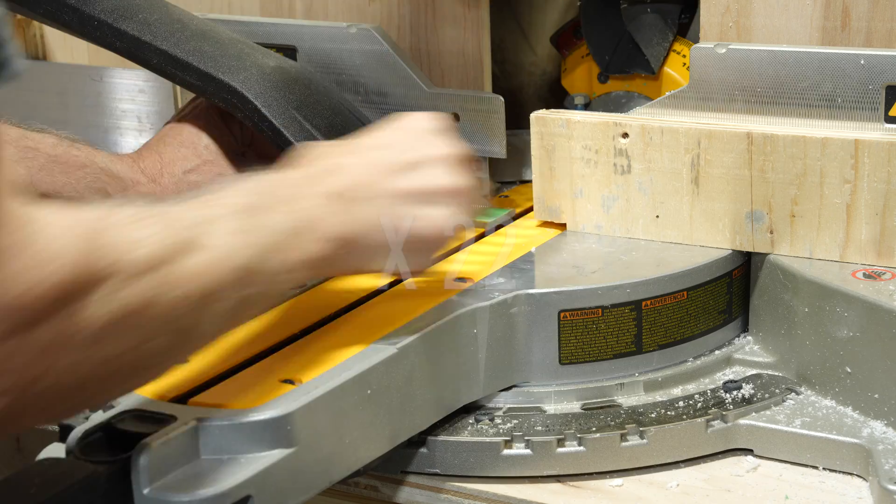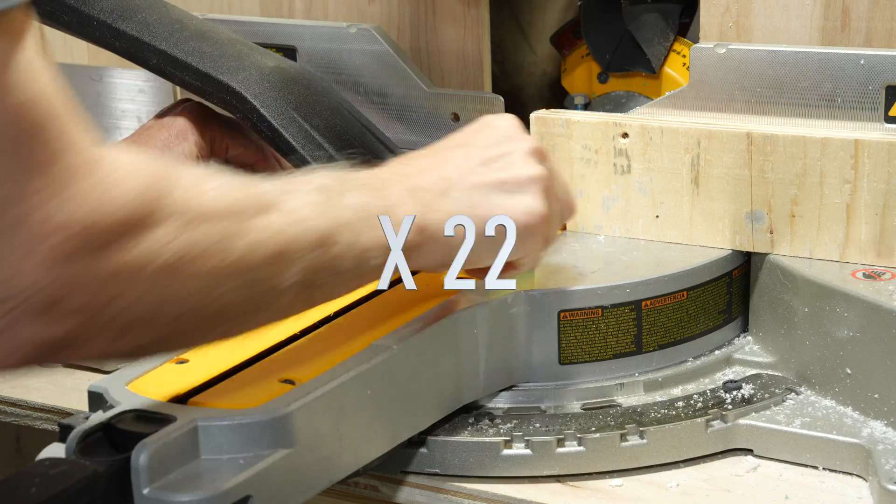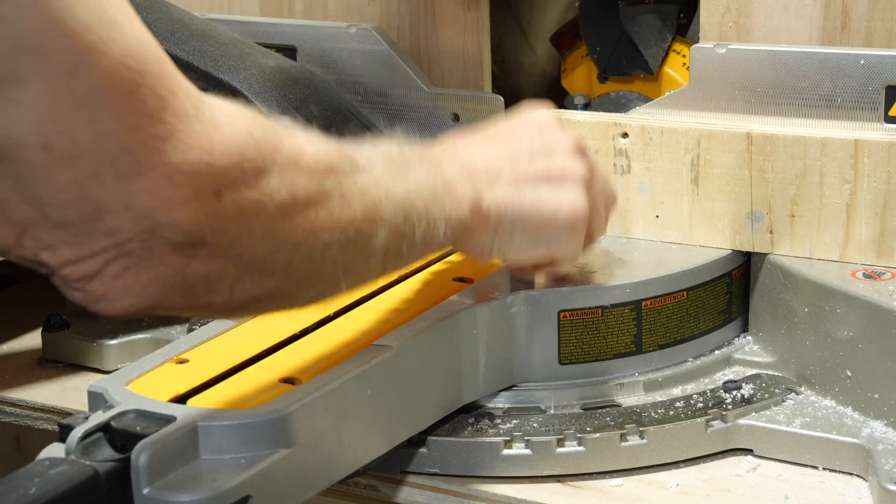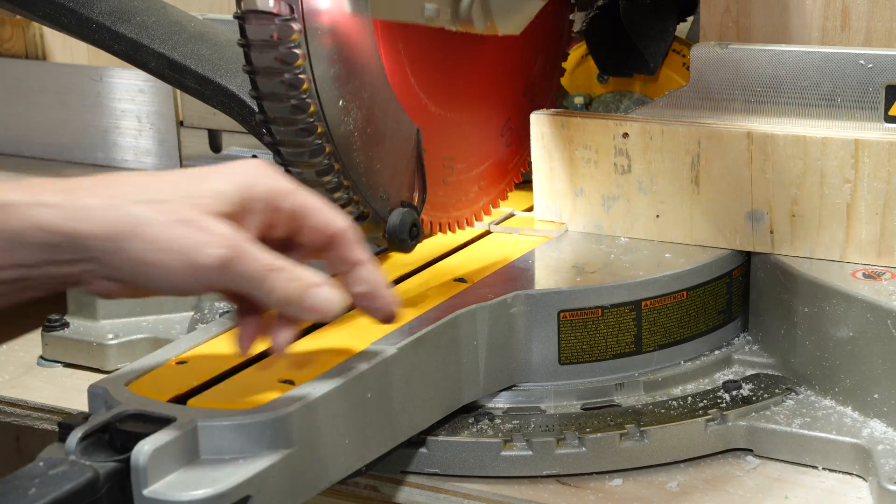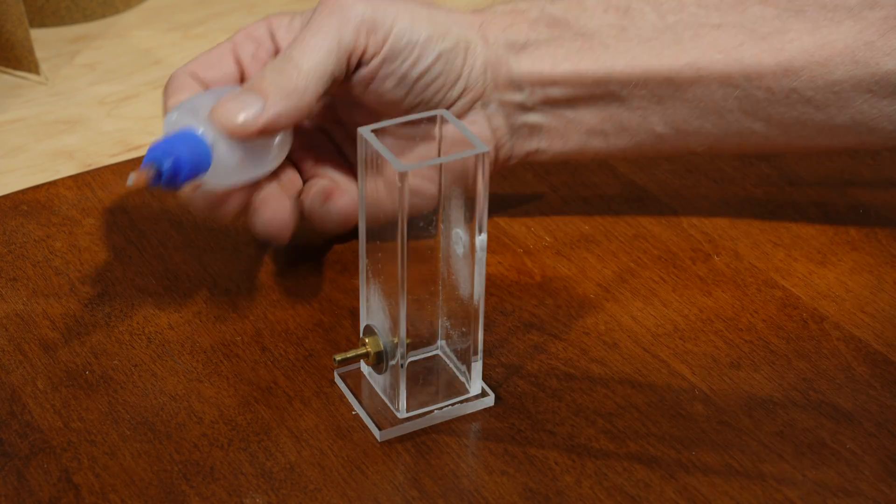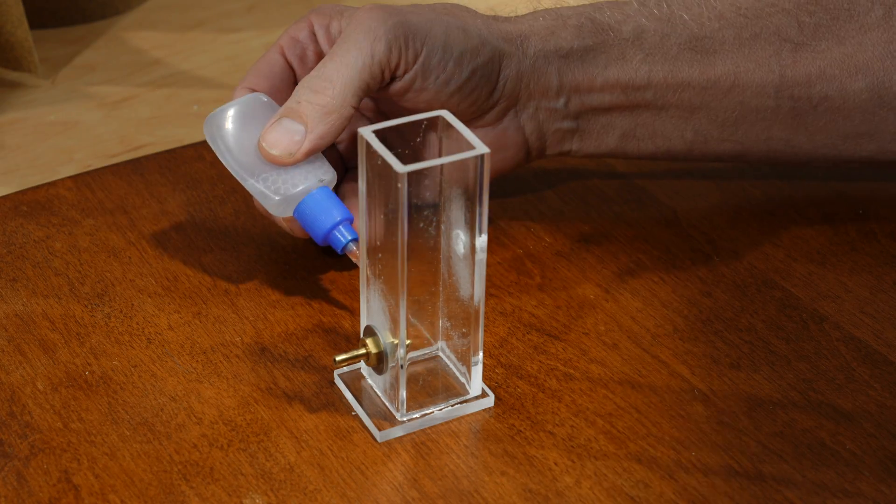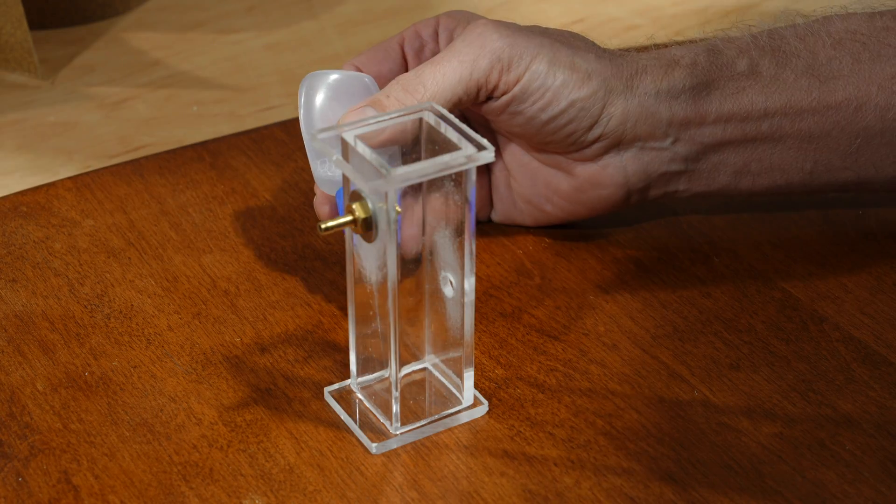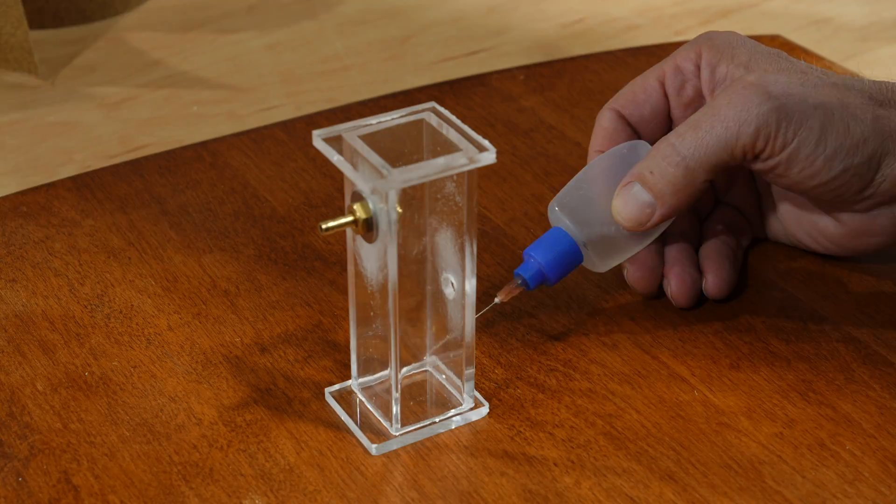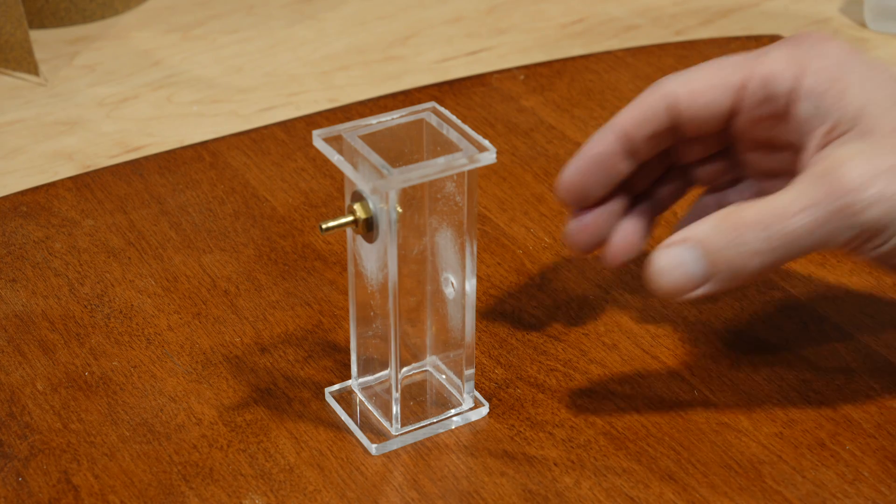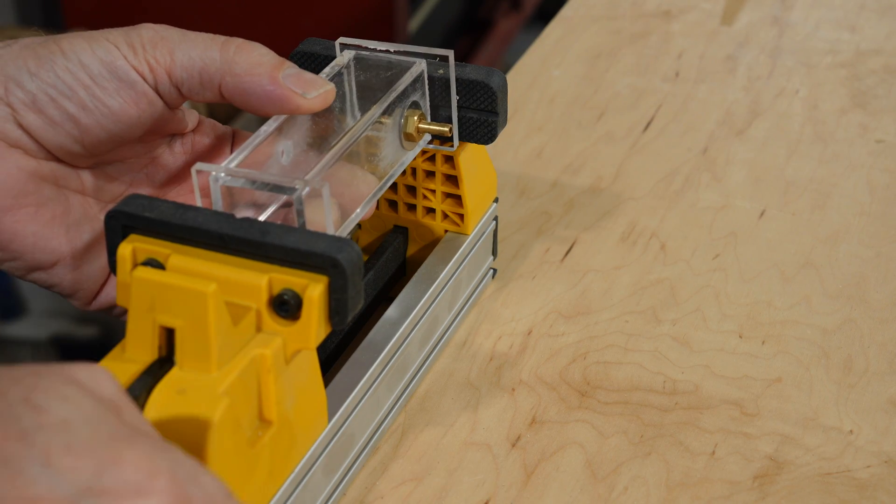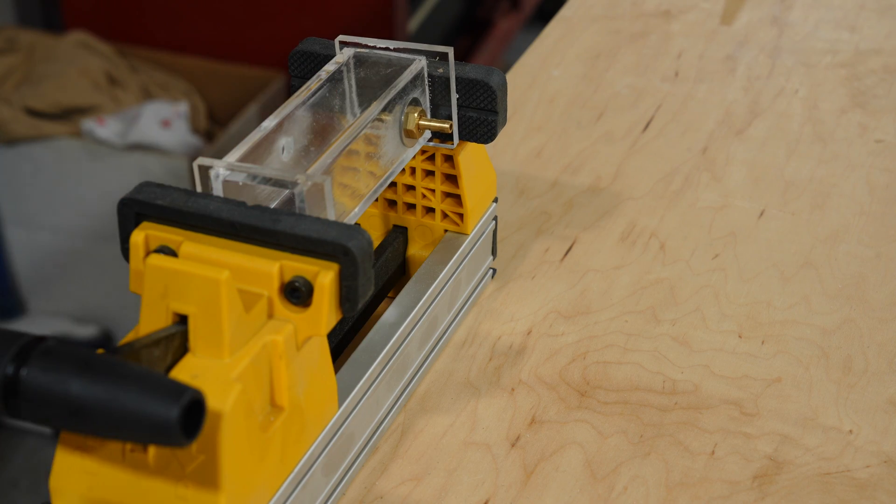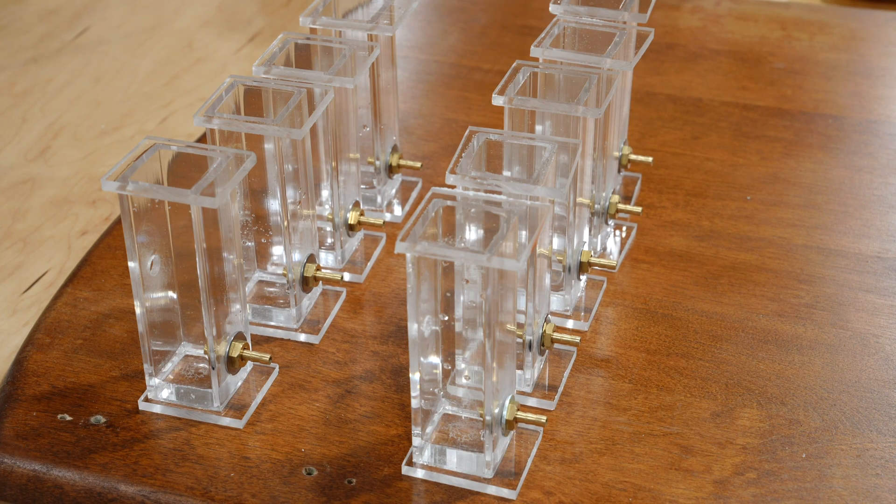With that complete, I moved on to cutting some acrylic caps to seal off the air chambers. Using weld on 4, I bonded the caps to the air chambers. After waiting about 20 seconds, I added pressure to the joint. Then after about an hour, I did a water test.